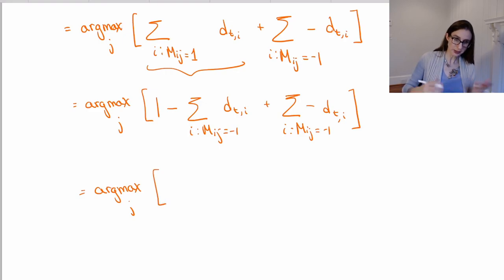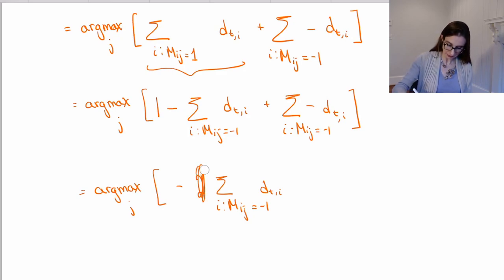So this thing is argmax over j. And then the one doesn't determine, if you add one to something, that doesn't influence the argmax. So this is actually two times the sum over i such that M_ij equals negative one d_ti. And again, this lovely two does not affect the argmax, so I can get rid of that.